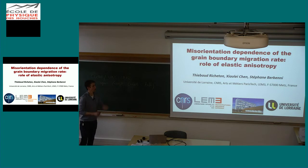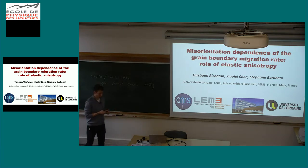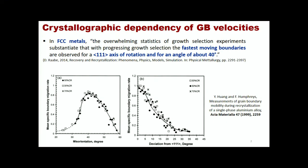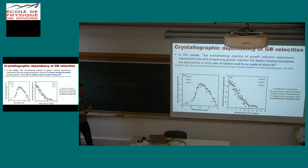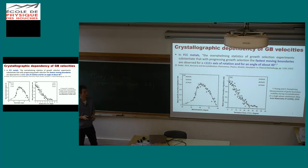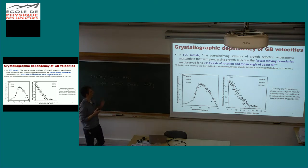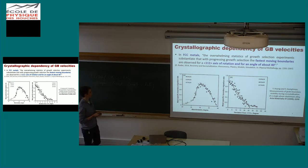The talk today is about misorientation dependence of grain boundary migration rates. I will start with a quotation from our review paper, which says that in FCC metals, from grain selection experiments, they have overwhelming data, and generally they show that the fastest moving boundaries are observed for a 111 axis and rotation about a 40-degree misorientation angle.